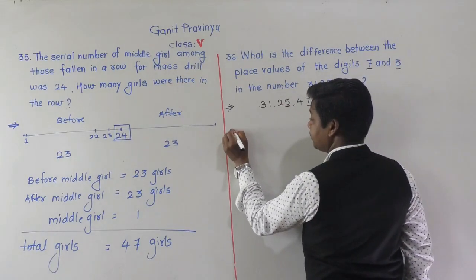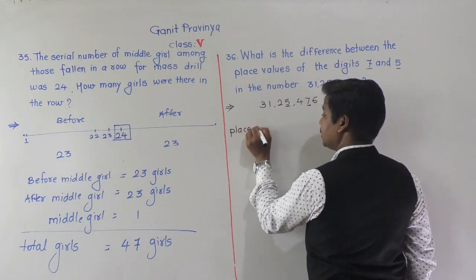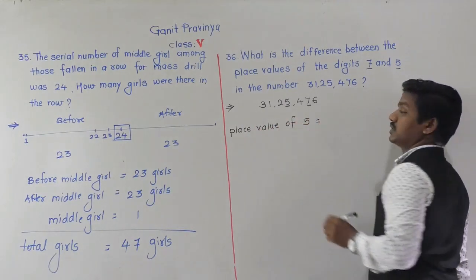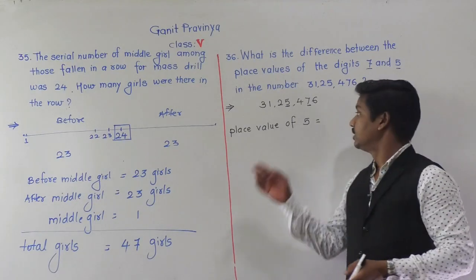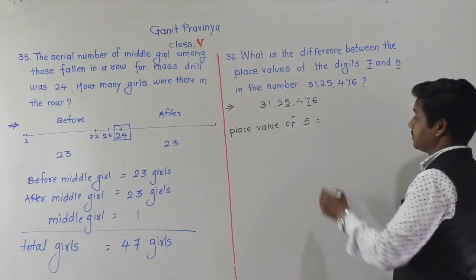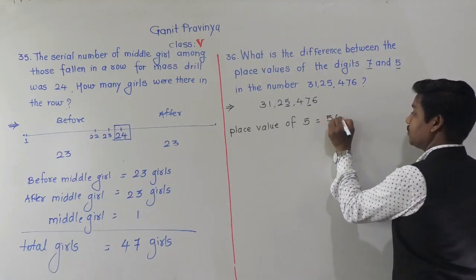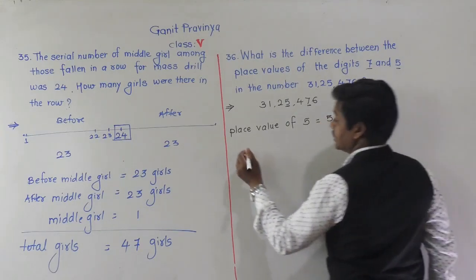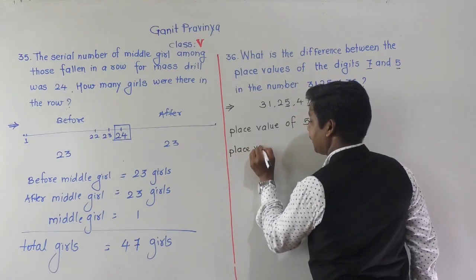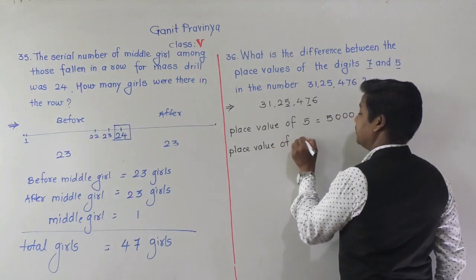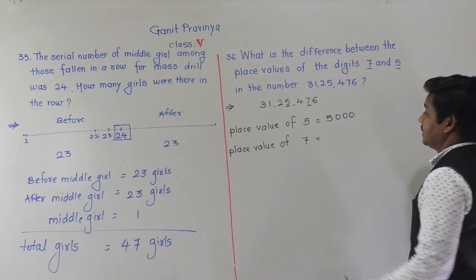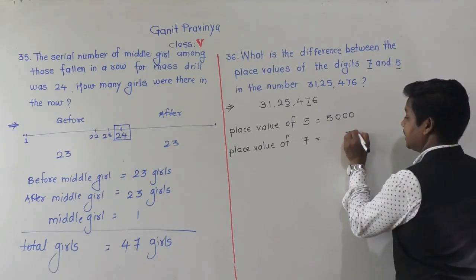The place value of 5 is 5,000. Now for 7: 7 is at the tens place, so the place value of 7 is 70. We need to find the difference: 5,000 minus 70.